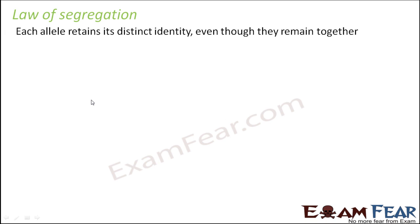The next law is the law of segregation. Segregation means separation. This law states that each allele retains its distinct identity even though they remain together. Each allele has its own identity — they do not blend with each other. This was as per Mendel's law.